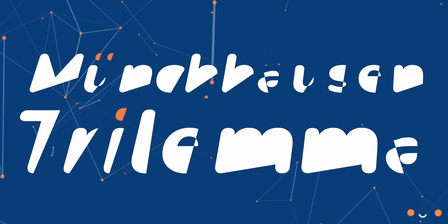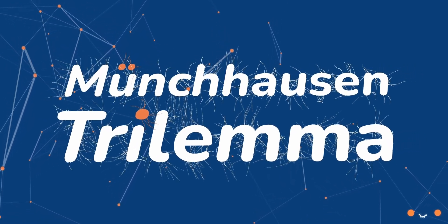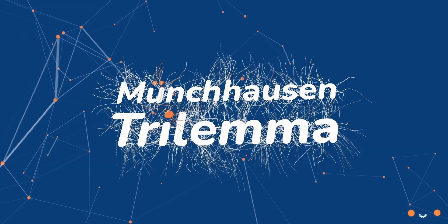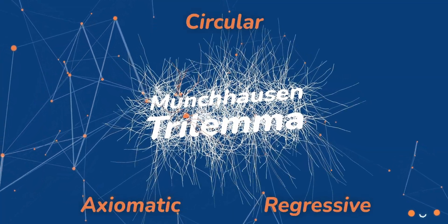The Munchhausen Trilemma is a thought experiment that states that any attempt to prove that some proposition is true must end with either a circular, axiomatic, or regressive argument.